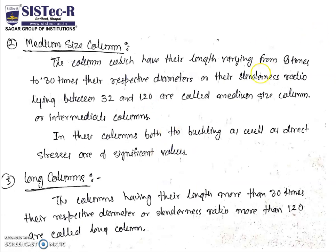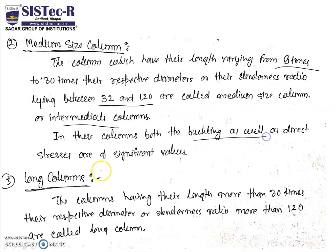Medium-size columns have a length varying from 8 to 30 times their respective diameter and a slenderness ratio lying between 30 to 120. These are called medium or intermediate columns. Their failure region involves both buckling and crushing, as both stresses are significant. Long columns have a length more than 30 times their respective diameter and a slenderness ratio more than 120. Their failure mode is only and only buckling.